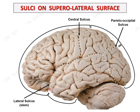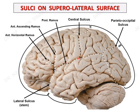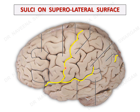The central sulcus separates the frontal and parietal lobes, and the parieto-occipital sulcus separates the parietal and occipital lobes. The lateral sulcus begins on the inferior surface as the stem of the lateral sulcus, then enters onto the superolateral surface and trifurcates into three rami: the anterior horizontal ramus, anterior ascending ramus, and posterior ramus. The point of trifurcation is known as the sylvian point. The posterior ramus of the lateral sulcus separates the frontal lobe from the temporal lobe, whereas the temporal lobe is separated from the occipital lobe by an imaginary line extending from the pre-occipital notch to the junction of the posterior ramus of the lateral sulcus and the parieto-occipital sulcus.